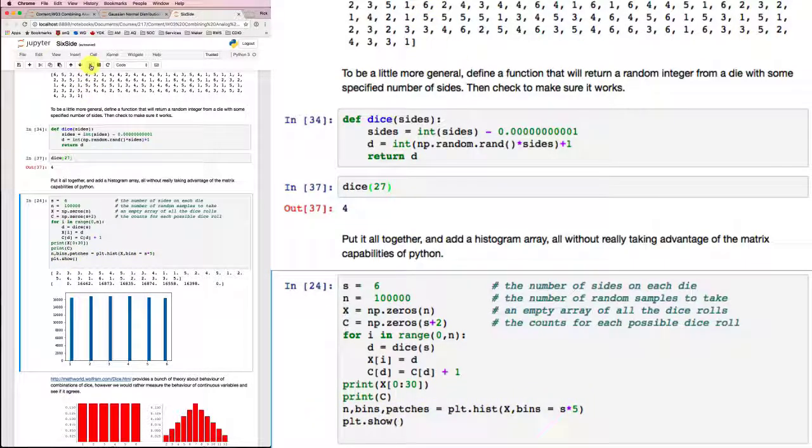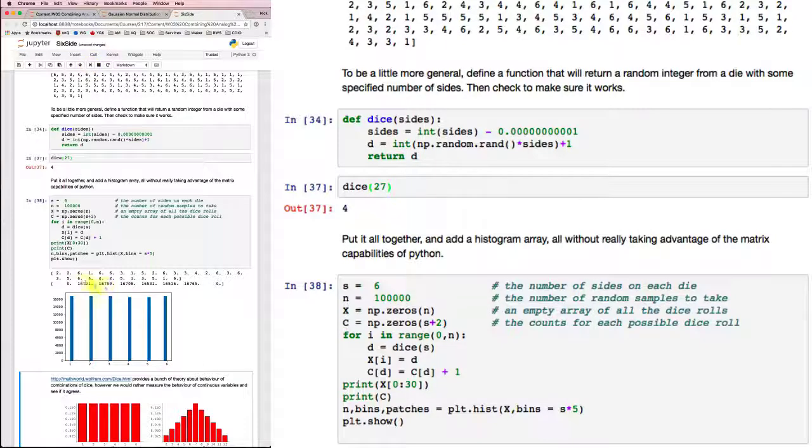So run that. And I get a bunch of what looks like random values. But much more convincing, I look at these numbers, and they're all about 16,700, not too far off. So it looks like I'm getting fairly random numbers there.